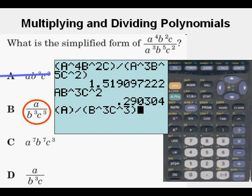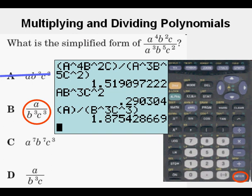We enter that and notice that the numerator and denominator both of this expression are in parentheses. Again, very important. We press enter. We do not get 1.52, we get 1.88. So we're going to cross that out as incorrect.